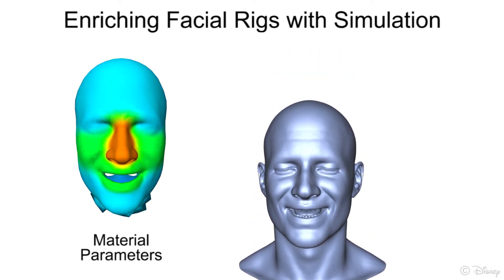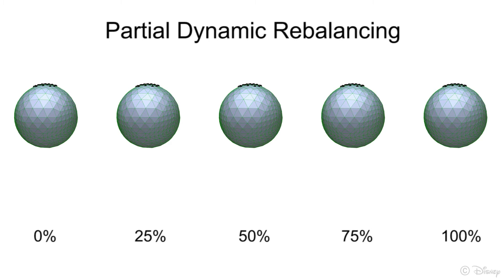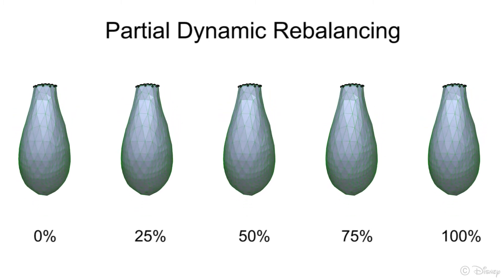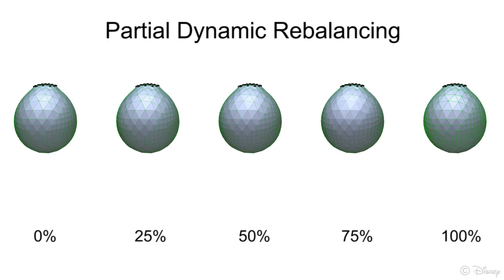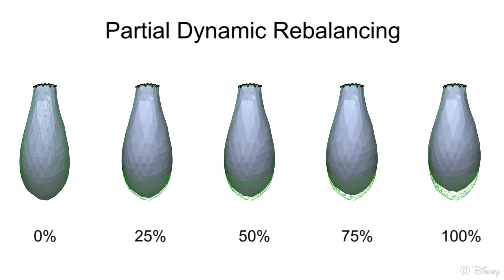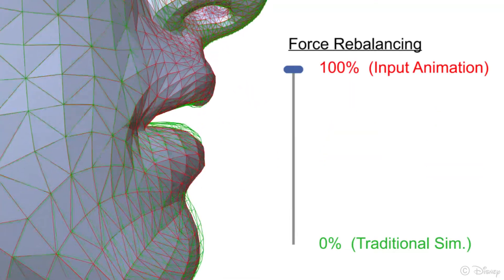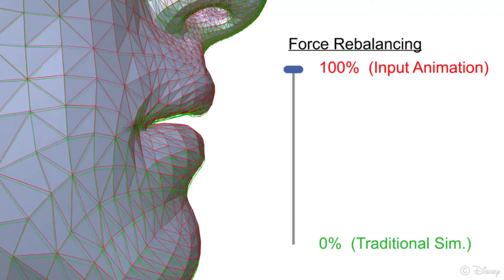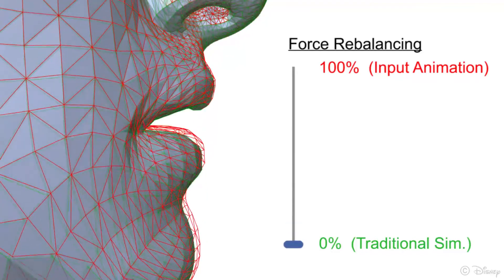Our approach also allows for partial dynamic rebalancing, where an artist can dial in a certain amount of spurious forces as desired. Here we see again the toy example of a ball with changing material parameters. Our results are shown in blue, while traditional simulation without rebalancing is shown in green wireframe. After the ball comes to rest, we stiffen the material, and then soften it again. The force rebalancing step can be dialed in as desired, from completely off on the left to fully on with no spurious forces on the right. On the face, we can continuously control the amount of spurious motion, interpolating seamlessly between 100% rebalancing to match the input animation in red, to 0% matching traditional dynamic simulation, and back to 100%.